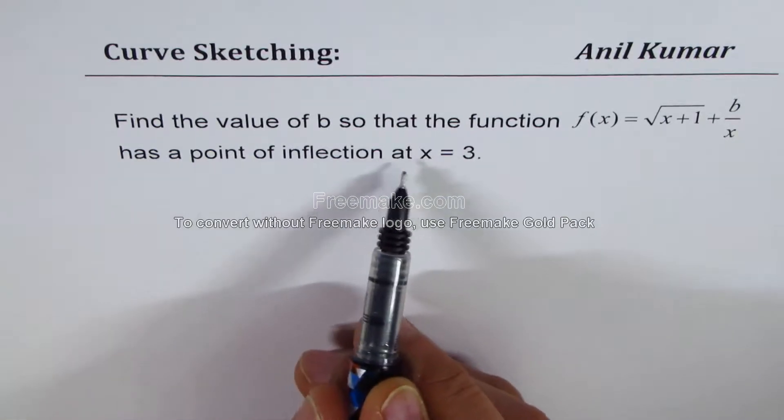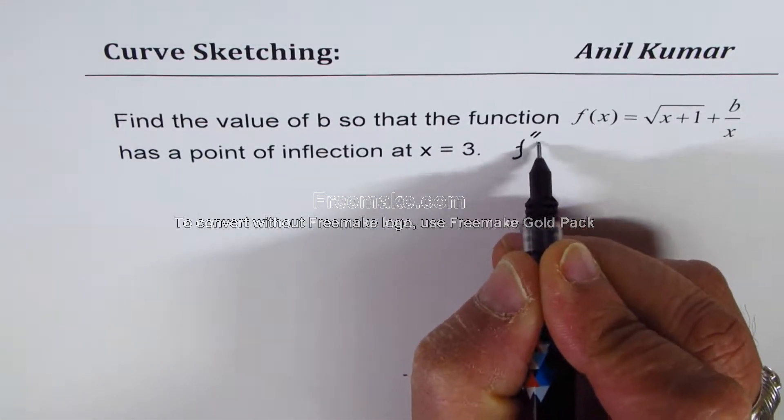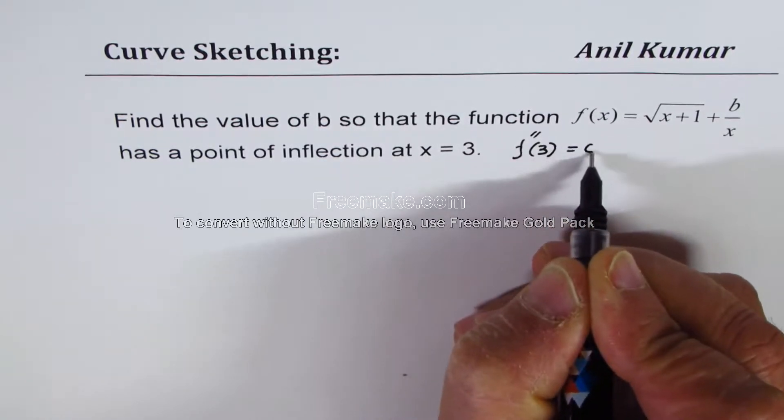When we say point of inflection at x equals 3, it really means that the second derivative at 3 is equal to 0.